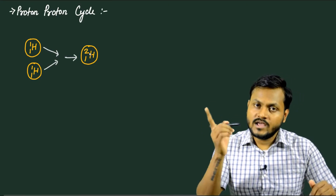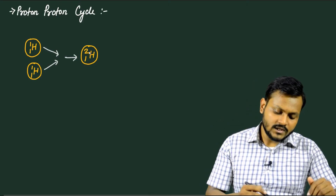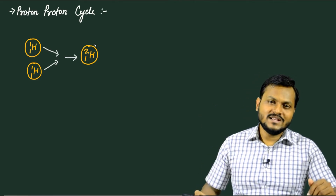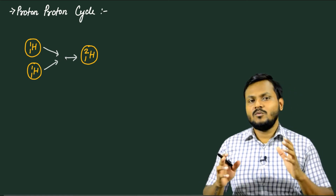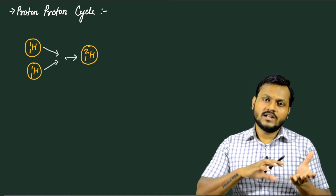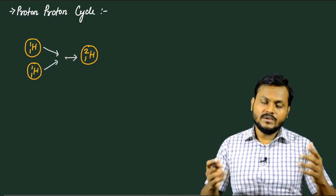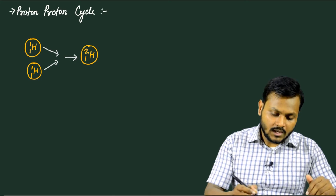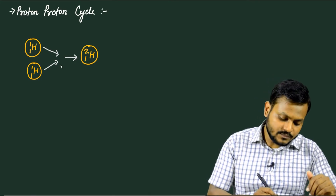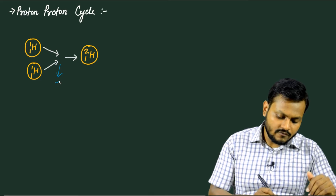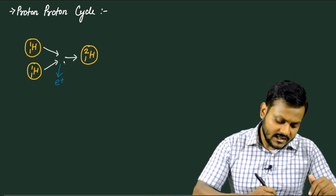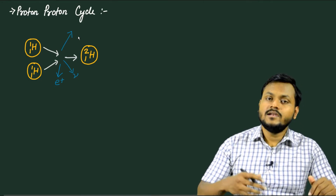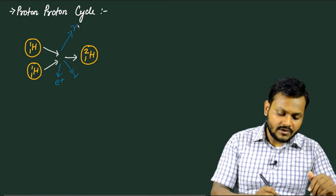When the two protons overcome coulombic repulsion and fuse together, they create a deuterium nucleus containing one proton and one neutron. Since two protons combine to give one proton and one neutron, a beta decay process has also taken place — specifically positive beta decay, where a proton gets converted to a neutron. This results in the emission of a positron (anti-electron), a neutrino, and energy in the form of gamma radiation.